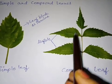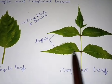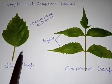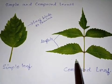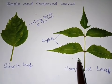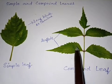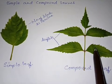These small leaflets make up the compound leaf. So this is the difference: a simple leaf has a single lamina, and in the case of a compound leaf, the lamina is divided into many leaflets.